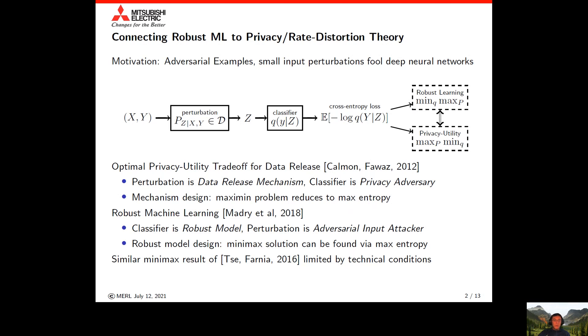In the robust machine learning problem, we viewed the goal as to construct a robust model in the form of the classifier, whereas the perturbation represents some attacker generating adversarial inputs. The problem of robust model design is posed as a minimax problem. Our fundamental result is to draw the connection between these two fields by showing a minimax result. The minimax solution for the robust machine learning problem can ultimately be found via a max entropy problem.